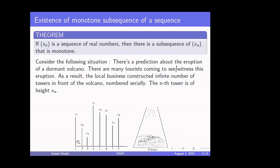These towers are constructed such that the height of the first tower is x1, the first term of the sequence. The height of the nth tower is xn. So the height of the first tower is x1, the height of the second tower is x2, the height of the third tower is x3, and so on.